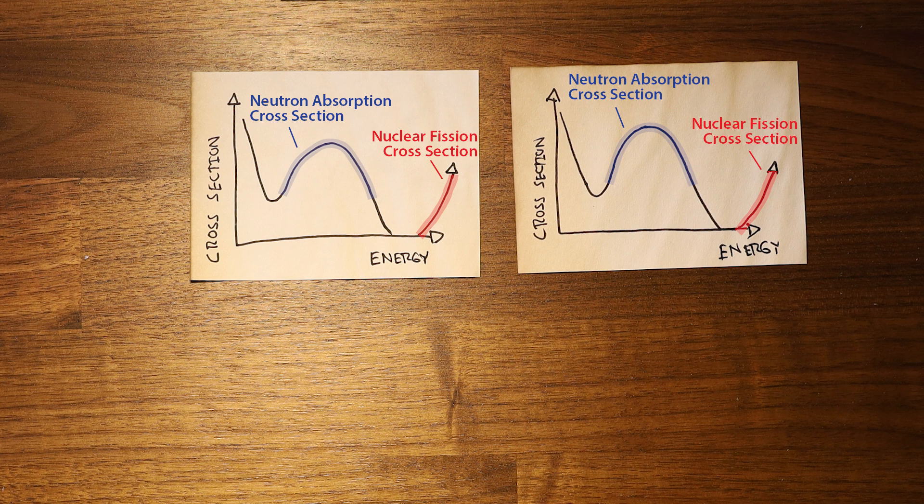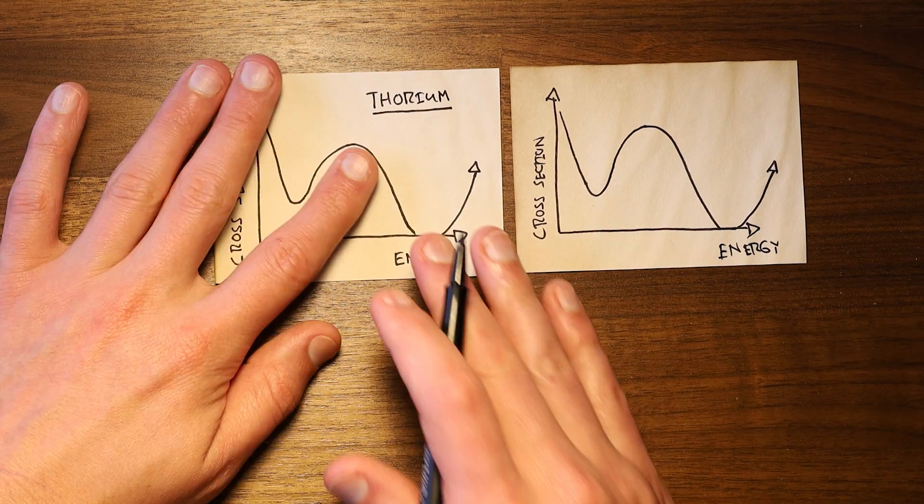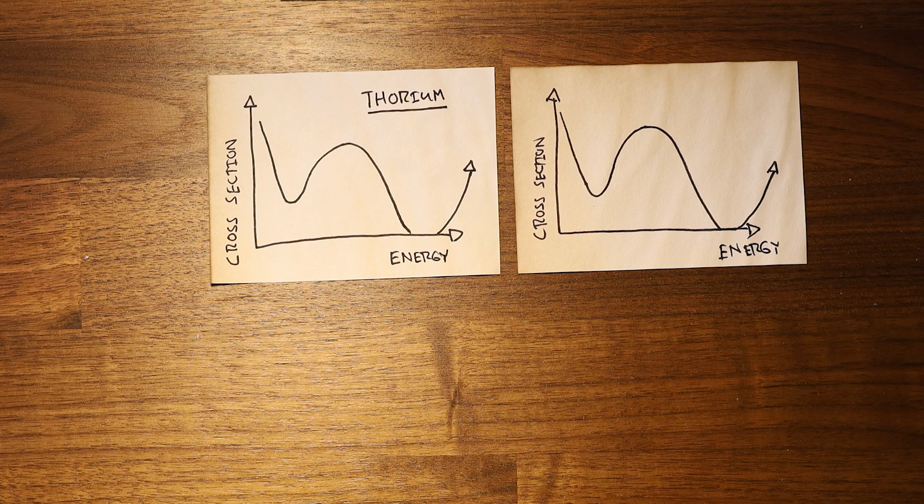Both uranium and thorium had absorption resonance peaks around 25 electron volts. Bohr labeled the first graph thorium, but he didn't label the second graph uranium. He instead labeled it U-238. Bohr then turned to Rosenfeld and said, "Now listen, I have it all."